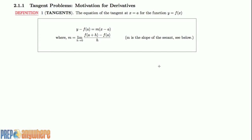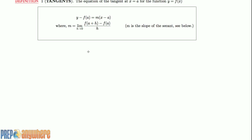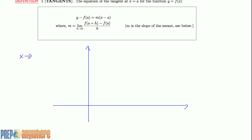Now that we've done limits, we know that as x changes we can relate that to how y changes in a function. Now we want a little bit more than that — we want to find the rate of change. So far, what we've been doing is: as x goes towards a particular number, where is y going? But now, as y changes a little bit at the same time x is changing, what is the ratio — the rate of change of y with respect to x?